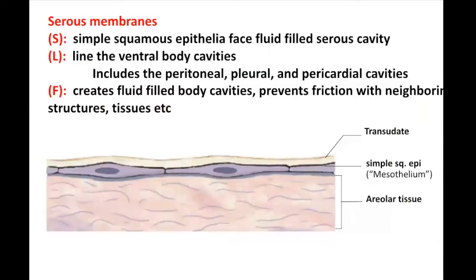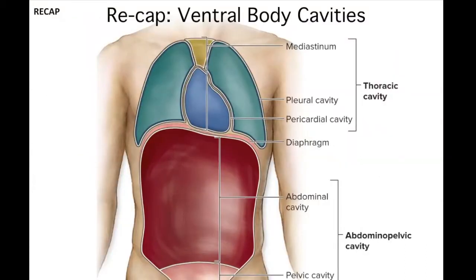Next type: serous membranes. These are going to be with those cavities we talked about in the first lecture — lining your ventral body cavities, like your pleural lining the lungs and your pericardial lining the heart. The function of these is to create a fluid-filled body cavity. Going back to the first lecture with ventral body cavities: remember that big open space divided into thoracic and abdominal pelvic cavity? Within those cavities, you had cavities created by the serosa or the serous membranes.